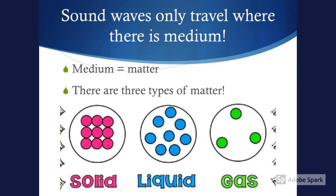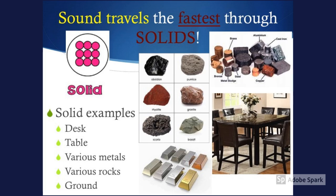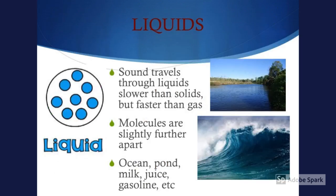There are three types of matter: solid, liquid, and gas. Sound travels the fastest through solids. Solid examples include desk, table, various metals, various rocks, and the ground. Sound travels through liquids slower than solids, but faster than gas.